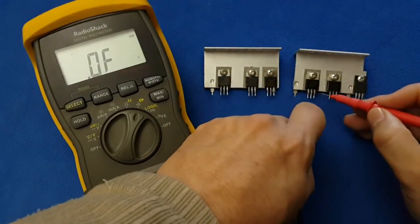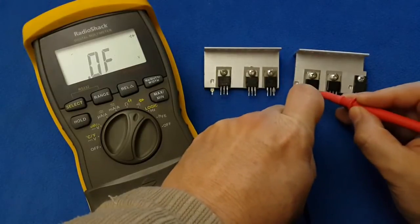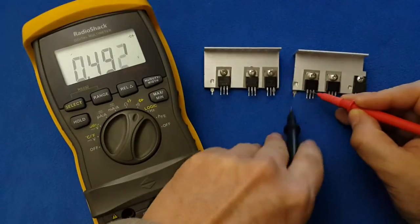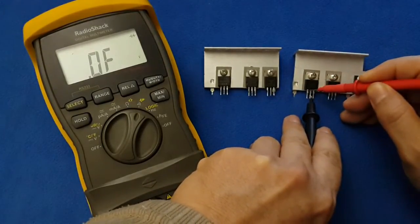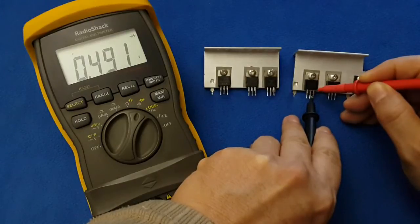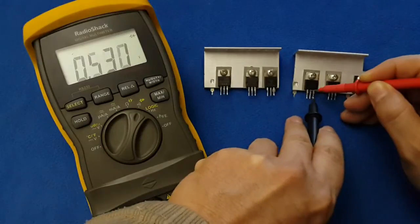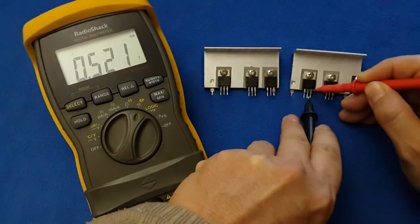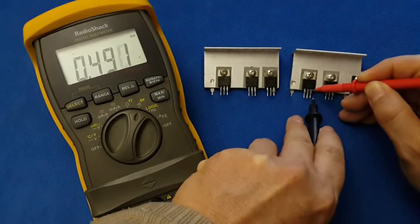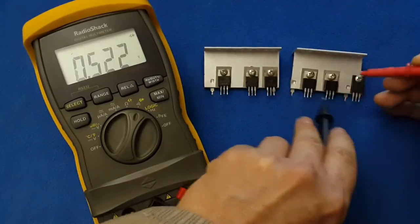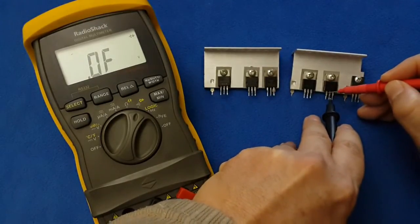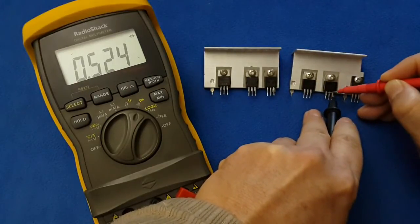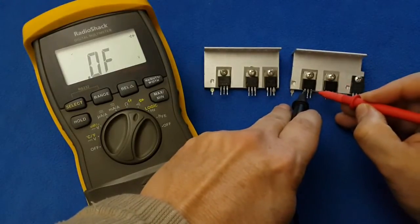For the NPN transistor, I must place the positive in the base and I will see base to collector. There is a voltage drop like a silicon diode. The base to emitter is always a higher voltage drop than the base to collector. That's the way that we identify the emitter. Same thing here, base to collector, higher voltage drop in base to emitter. I will invert the polarity just to make sure. Everything is okay.